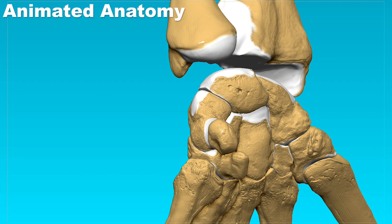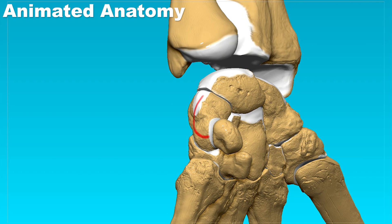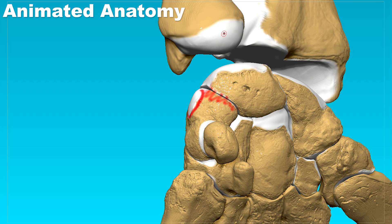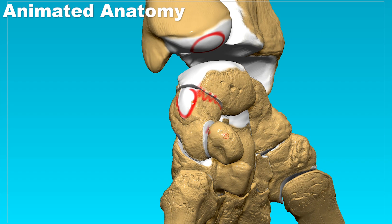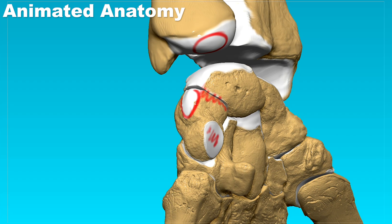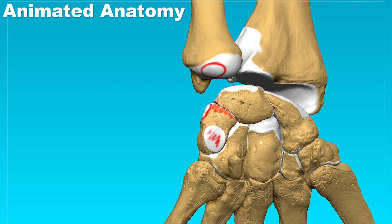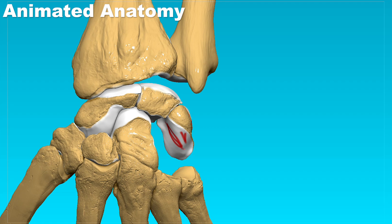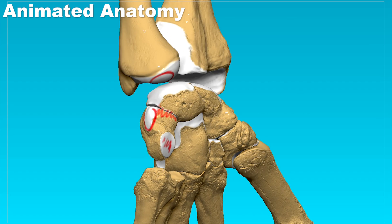The next bone we will talk about is the triquetrum. The triquetrum bone can be seen right here. It articulates with the lunate bone that we just explained, and it also has this articular surface for the articulation with the articular disc that articulates with the head of the ulna. You can see this flat articular surface here — it articulates with the small pisiform bone. And then you can see this large articular surface for the articulation with the hamate bone.